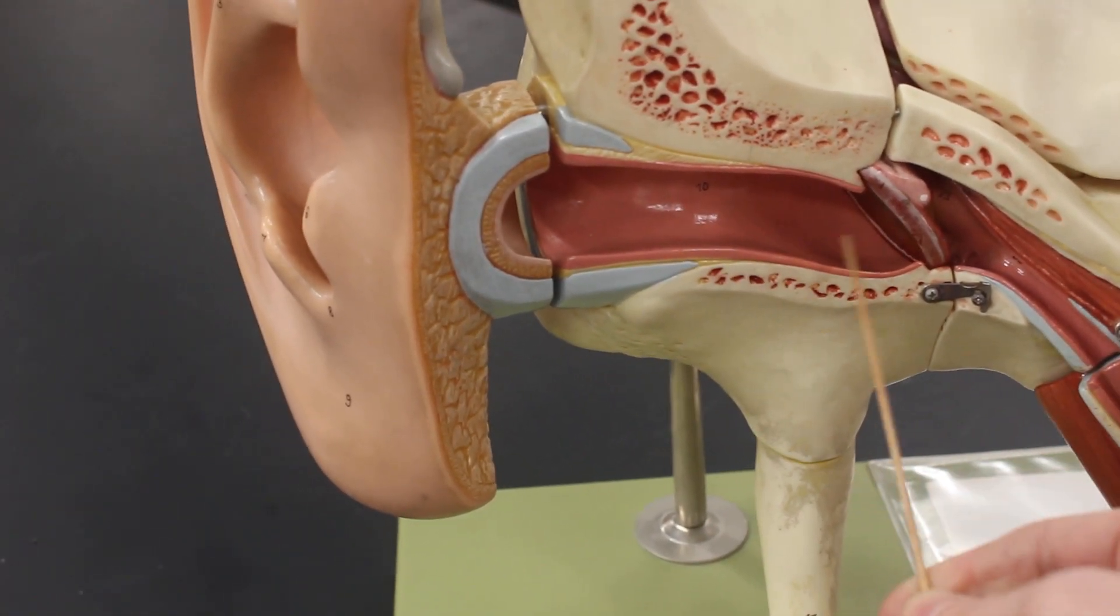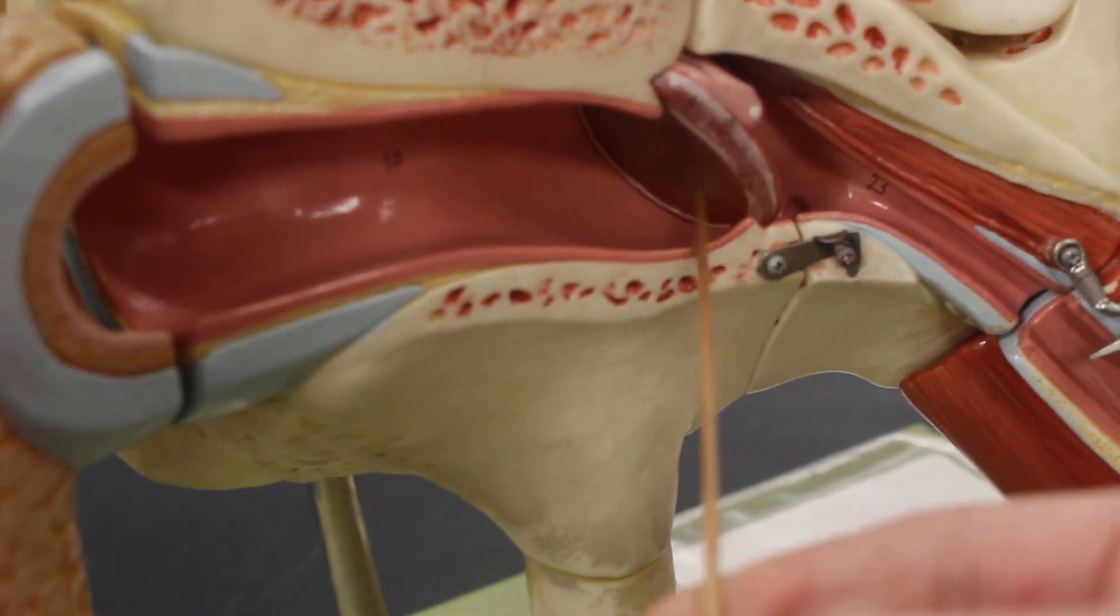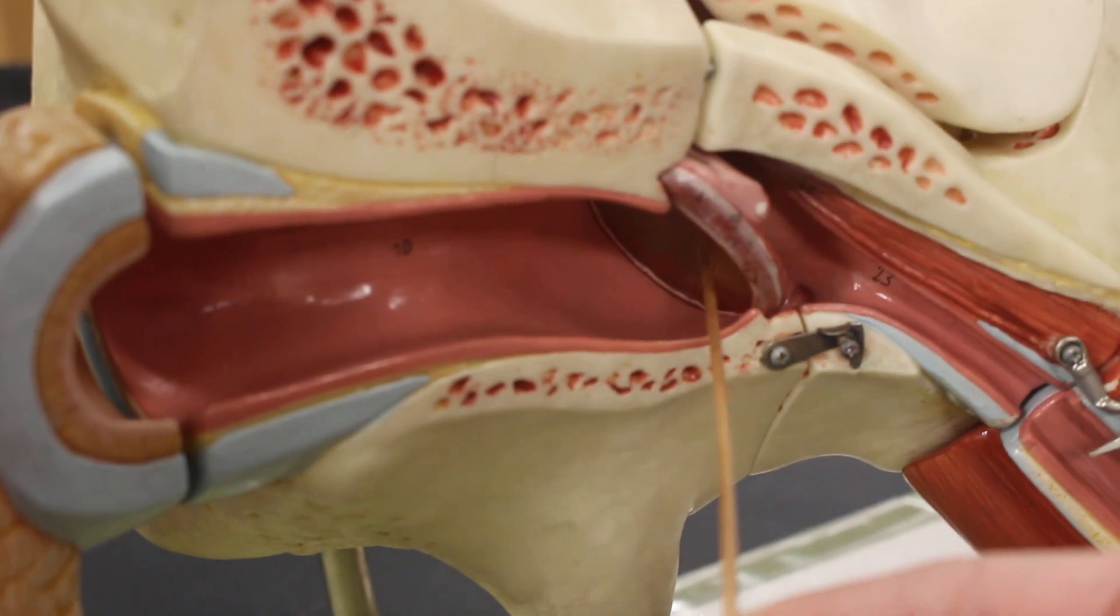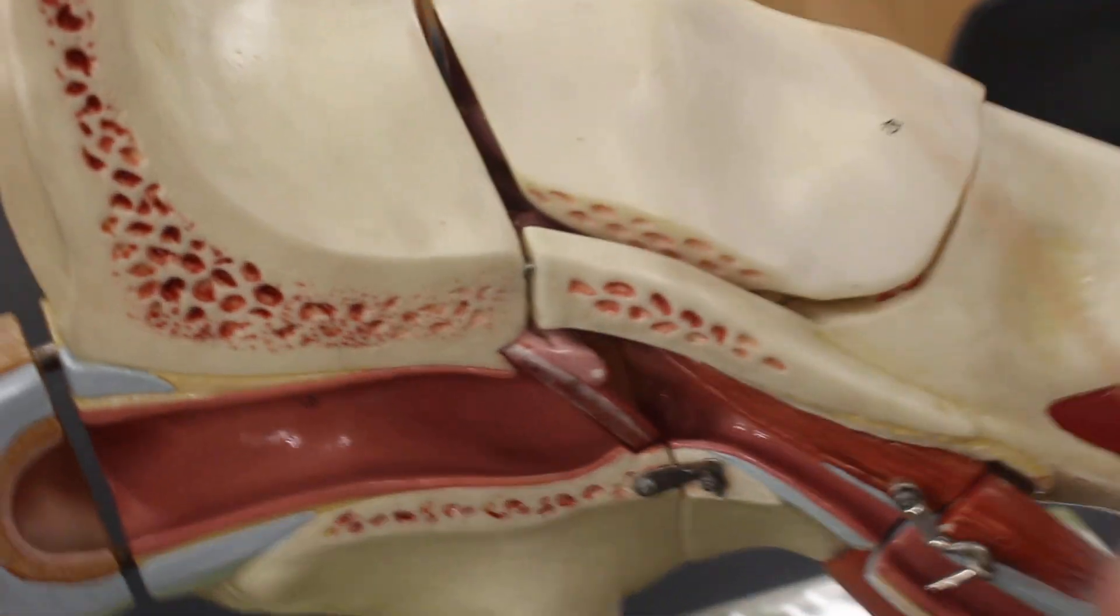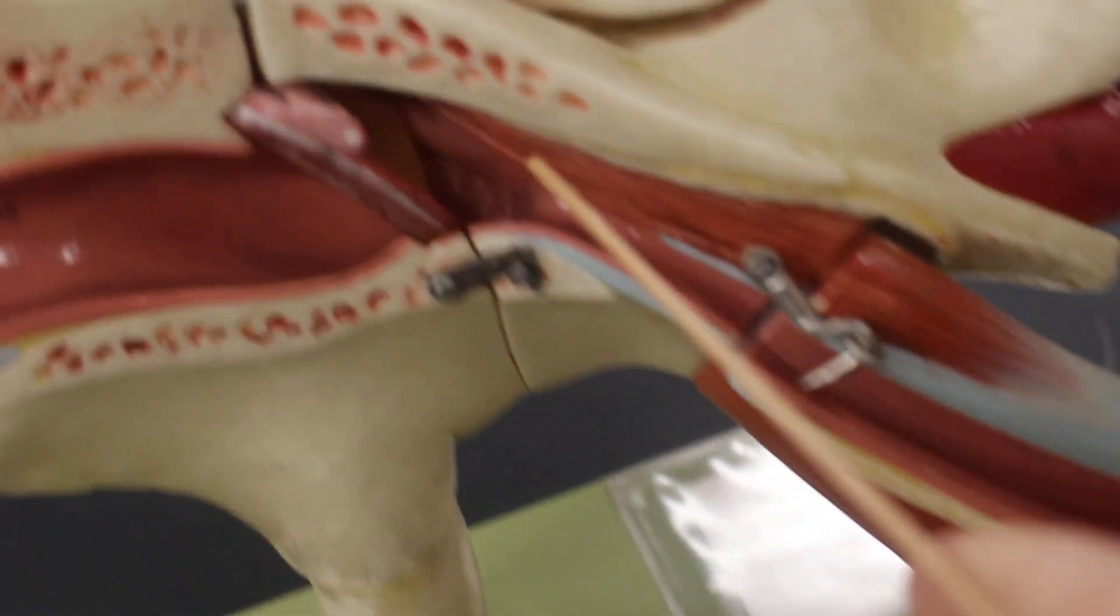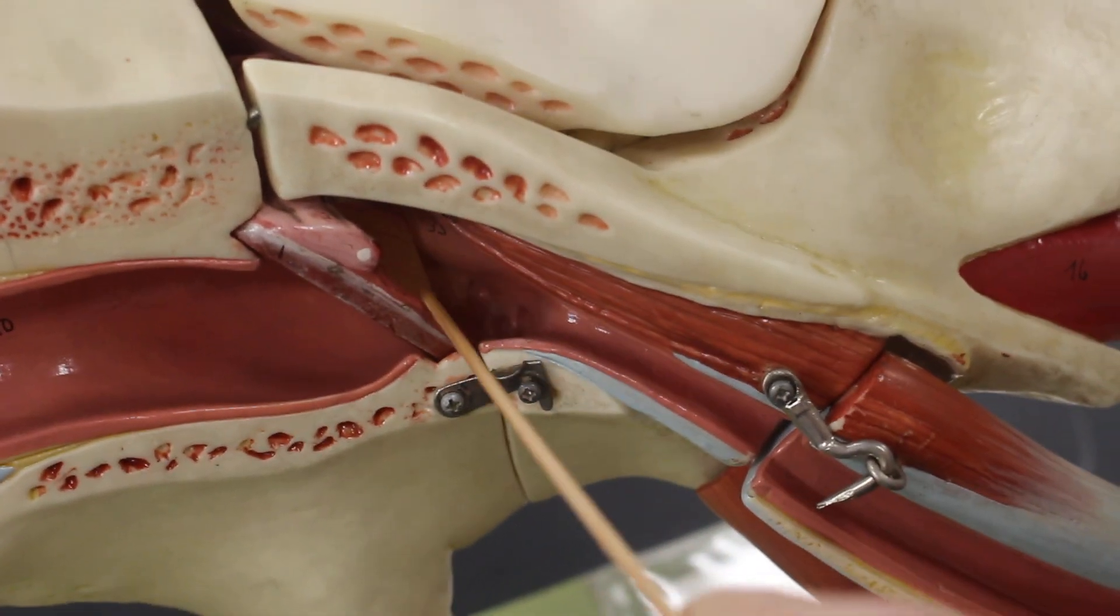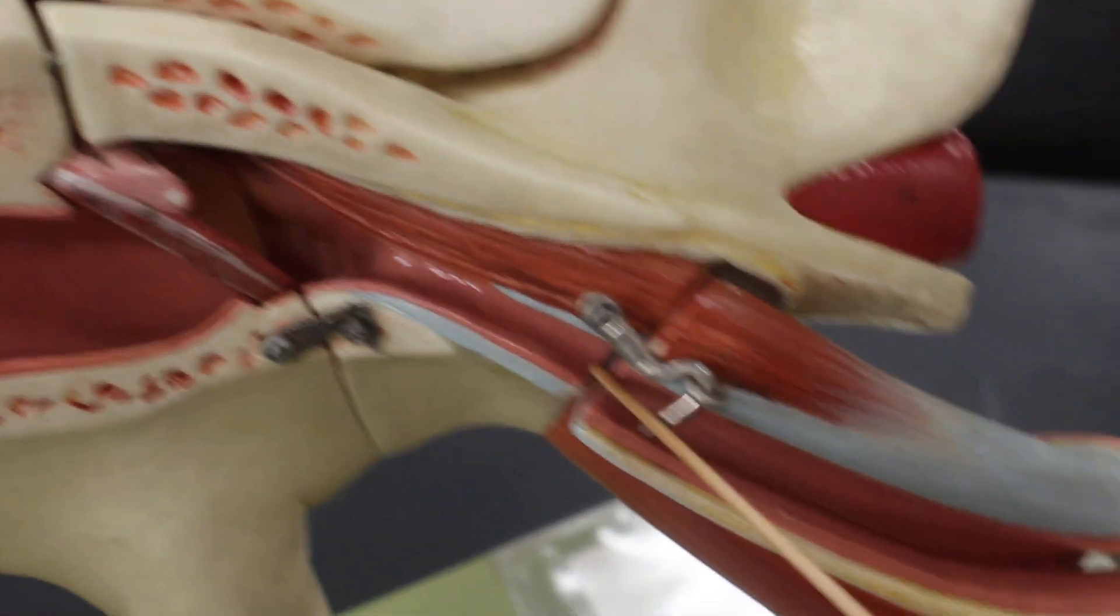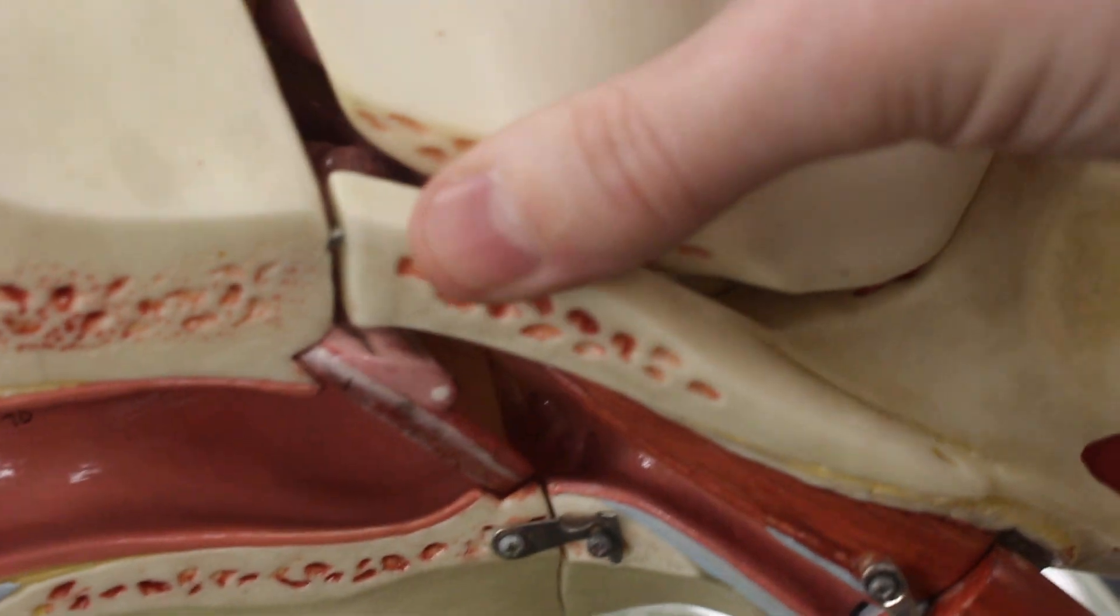The external ear ends in this membrane here called the tympanic membrane. This area over here is the middle ear. The middle ear includes this tube going out, which is the auditory tube.